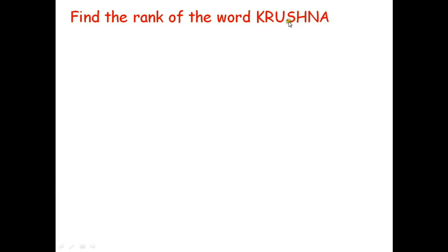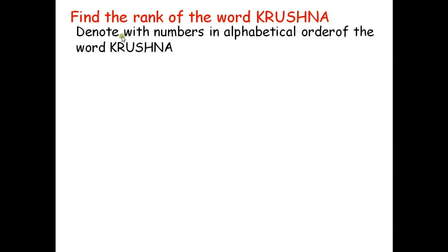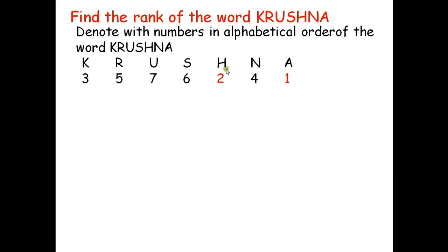The question is to find the rank of the word KRISHNA. To do this, we denote the letters of the word KRISHNA with digits in alphabetical order: A is denoted by 1, H is denoted by 2, K is denoted by 3, N is denoted by 4, R is denoted by 5, S is denoted by 6, and U is denoted by 7.